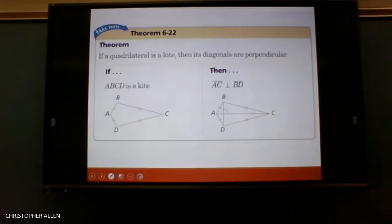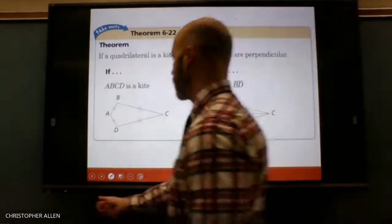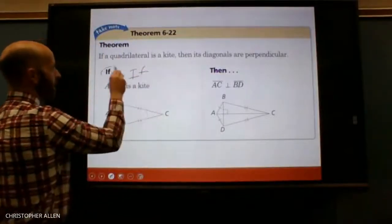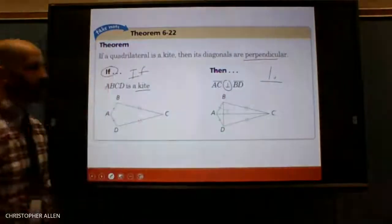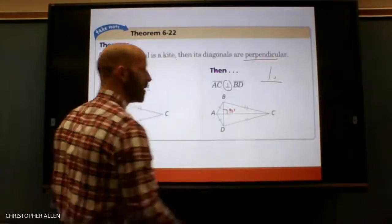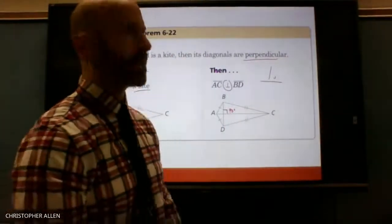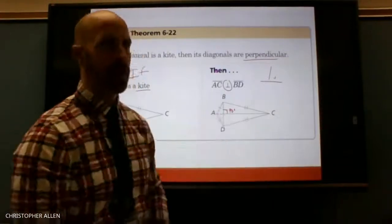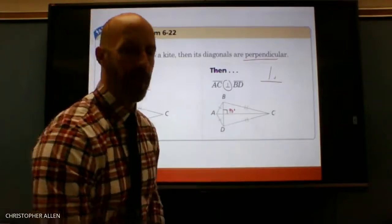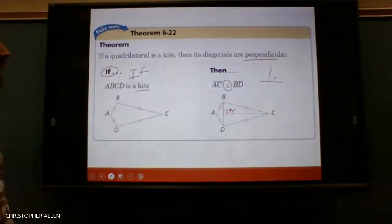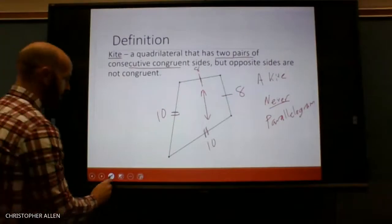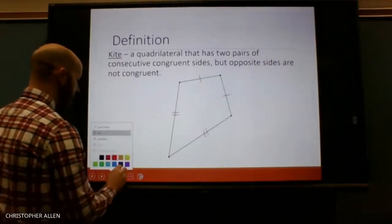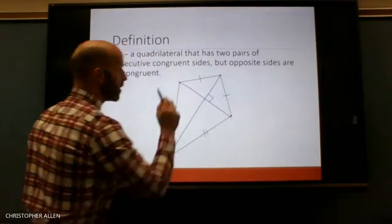The last theorem of the day: if a quadrilateral is a kite, then its diagonals are perpendicular. That perpendicular symbol means they form a 90-degree right angle. That's actually one of the reasons kites are made that shape — perpendicular diagonals give the most structural strength. So if I draw both diagonals of a kite, those diagonals have to be perpendicular.